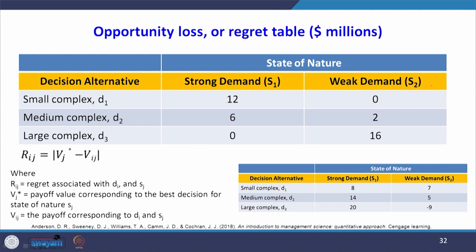Under the minimax regret approach, the decision maker chooses the decision alternative that minimizes the maximum regret that could occur over all possible states of nature. First, we form an opportunity loss or regret table. If the demand is strong, the best decision is D3 with payoff 20, so each element is subtracted from 20: 20-8=12, 20-14=6, 20-20=0. If demand is weak, the highest payoff is 7, so: 7-7=0, 7-5=2, 7-(-9)=16.